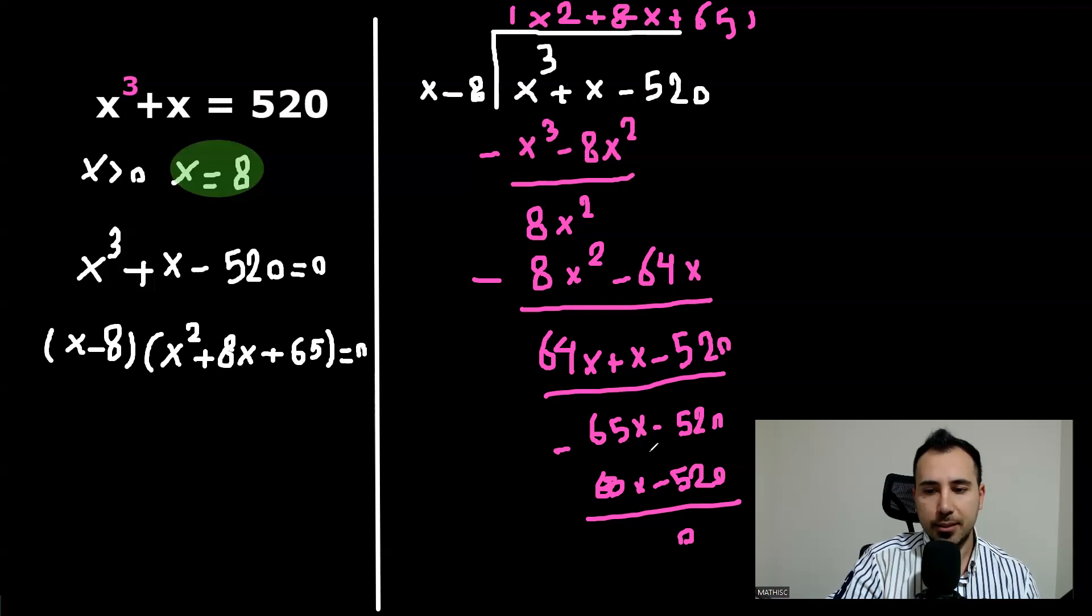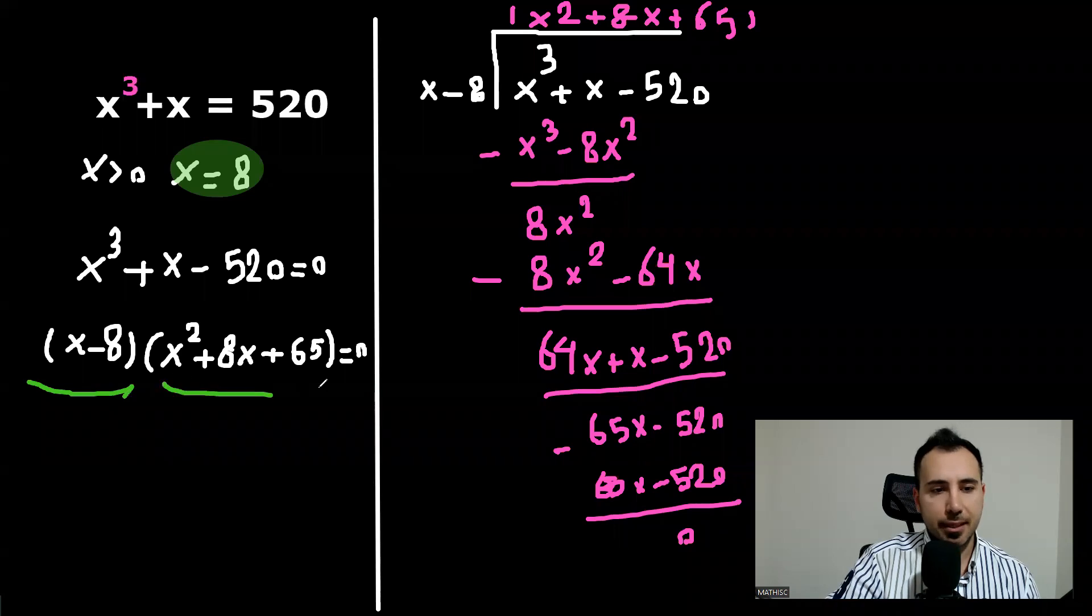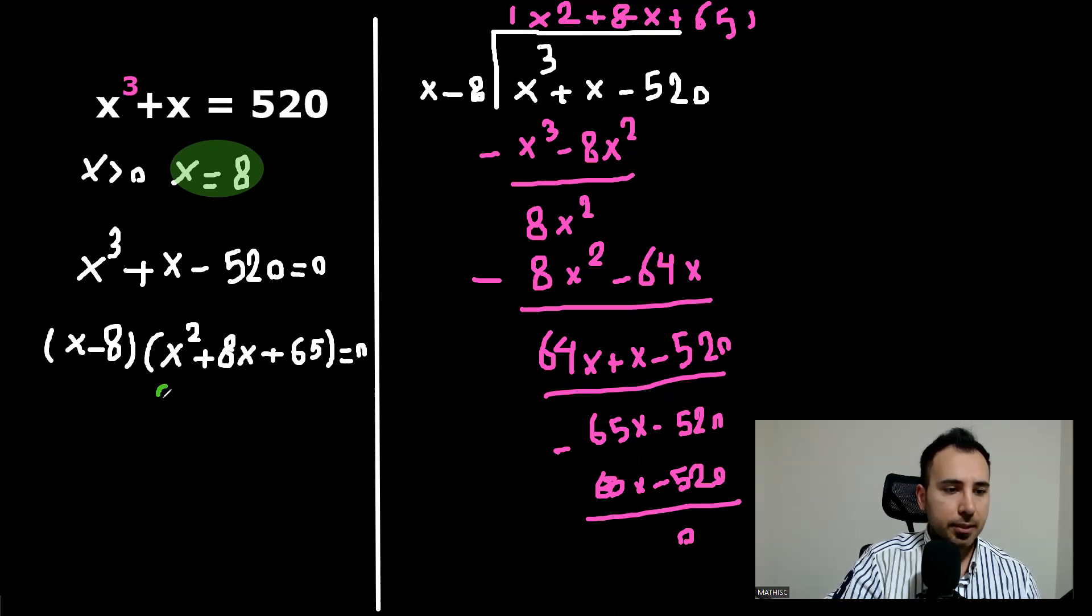We have two possibilities. Maybe the first one is zero. Maybe the second one is zero. If the first one is zero, of course, we get x equals eight. We already know this. How about this? Is this possible to be zero? Well, it would be. Let's just write it here.